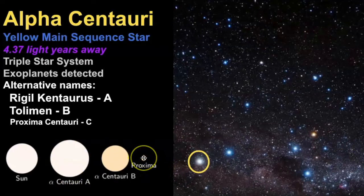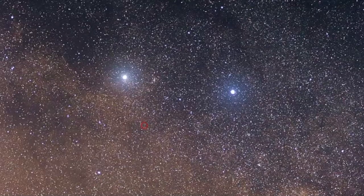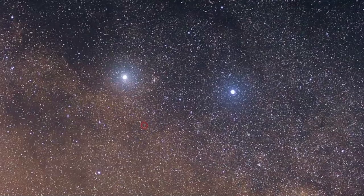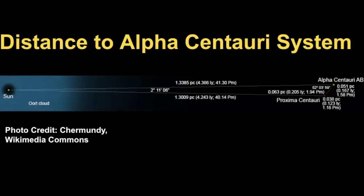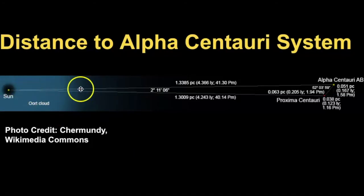Proxima Centauri — which is actually the closest star to us, not the A and B pair — is a red dwarf star. It is very tiny. In this picture we have Alpha Centauri and Beta Centauri, and there is a tiny little red dot in the middle of a red circle — that is Proxima Centauri. Looking at the distance diagram, we have the Sun, the Oort Cloud where comets originate, and Proxima Centauri is slightly closer than the Alpha Centauri A and B star systems.